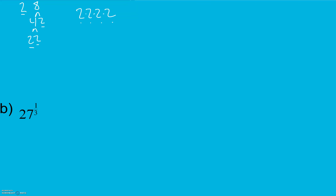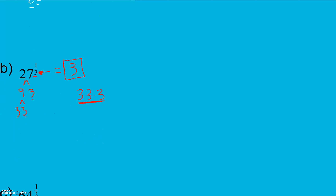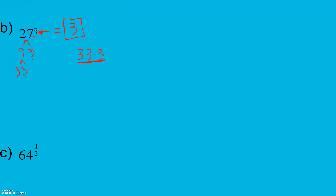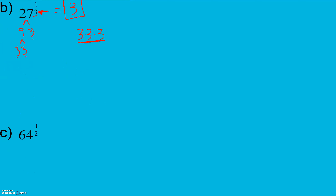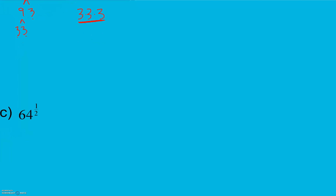27 to the 1/3 power means we're looking for something times itself 3 times — looking for groups of 3. 27 is 9 times 3, which is 3 times 3. So our prime factorization is 3 times 3 times 3. Since we're looking for a group of 3 and we have three 3's, this equals 3. The denominator of our exponent tells us how many we're looking for in a group — how many times our base had to be multiplied by itself to get to our power.